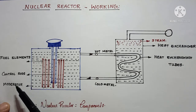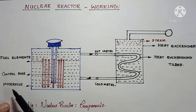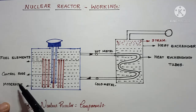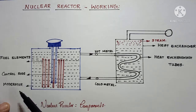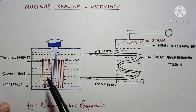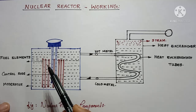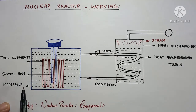Here you can see three things: fuel elements, control rods, and moderators. These three things are the essential components which are needed for the proper working of a nuclear reactor. First, we can discuss about fuel elements.